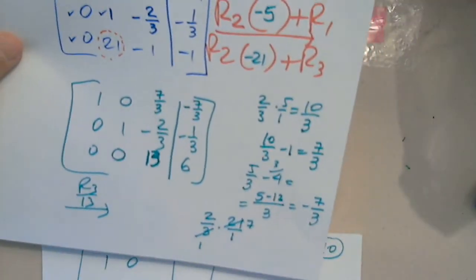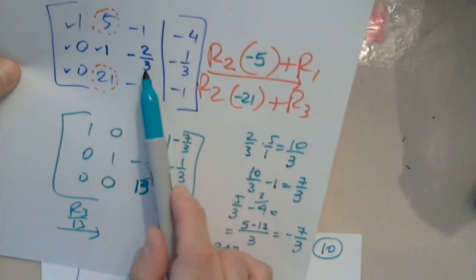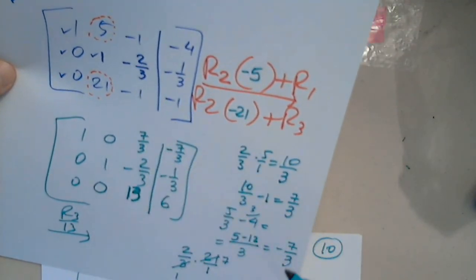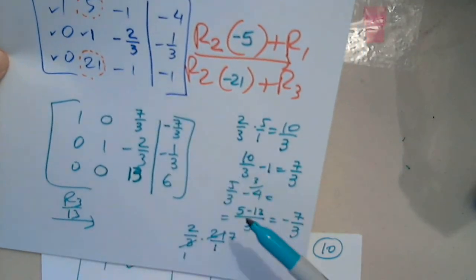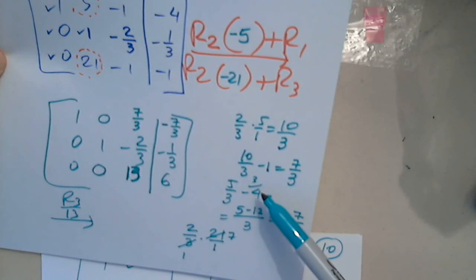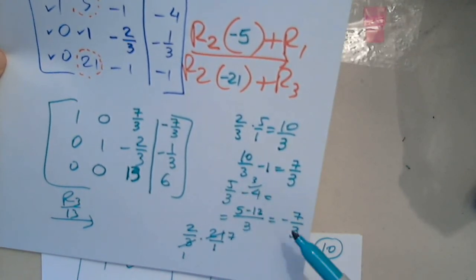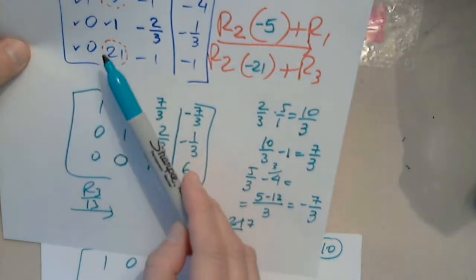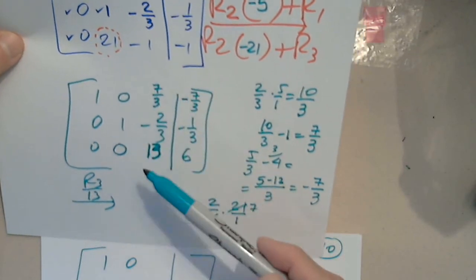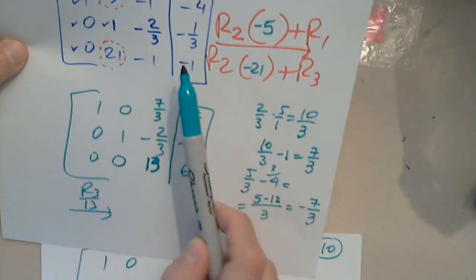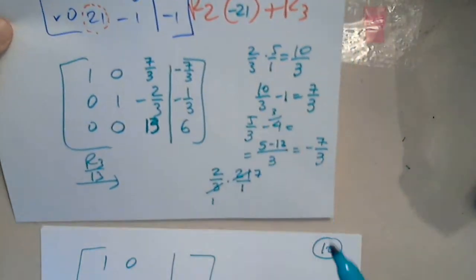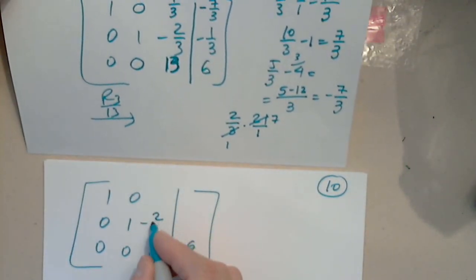I should probably check my numbers one more time. So this was positive 10 thirds minus 1 = 7 thirds — correct. And 5 thirds minus 4: that's 5 minus 12 over 3 = negative 7 thirds — correct. Negative 21 gives 0. 14 minus 1 is 13. And 7 minus 1 is 6. Very ugly, but it is what it is.